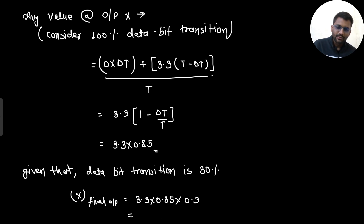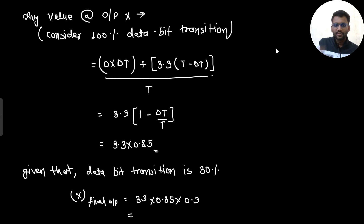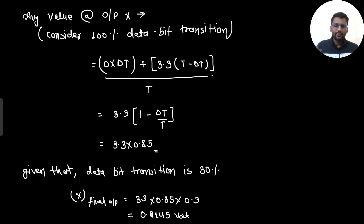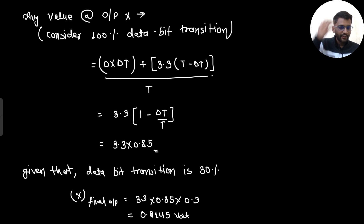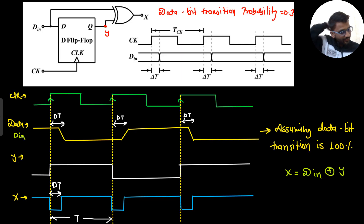Solving this gives the final output: 3.3 × 0.85 × 0.3 = 0.8415 volts. So the average voltage at node X is 0.8415 volts.